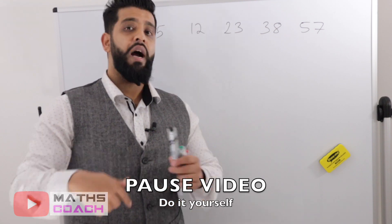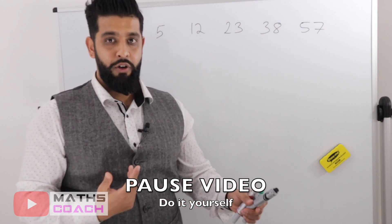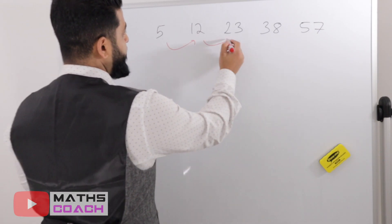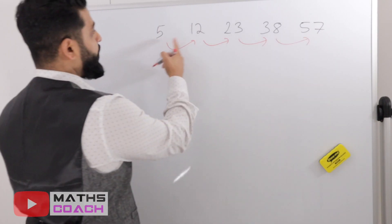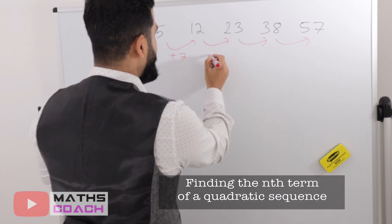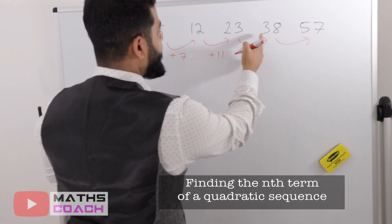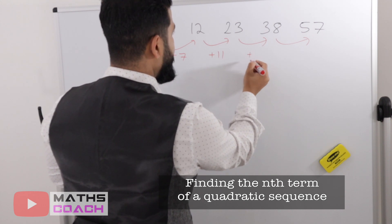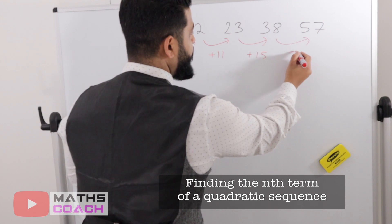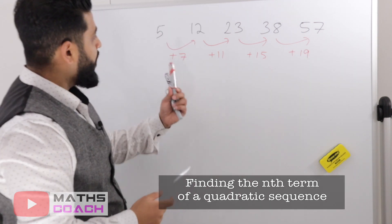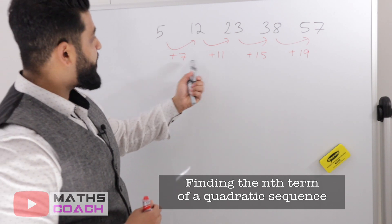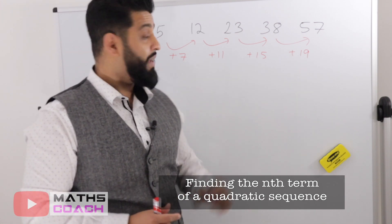Let's do another example — you might want to pause the video and try each step yourself before continuing. First, work out the difference between each term: 5 to 12 is add 7, 12 to 23 is add 11, 23 to 38 is add 15, 38 to 57 is add 19.